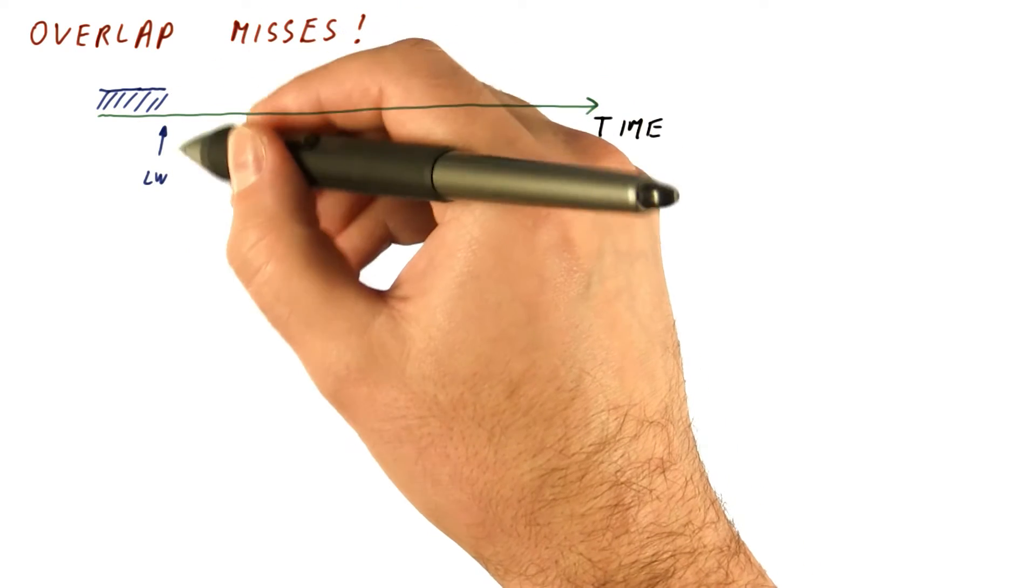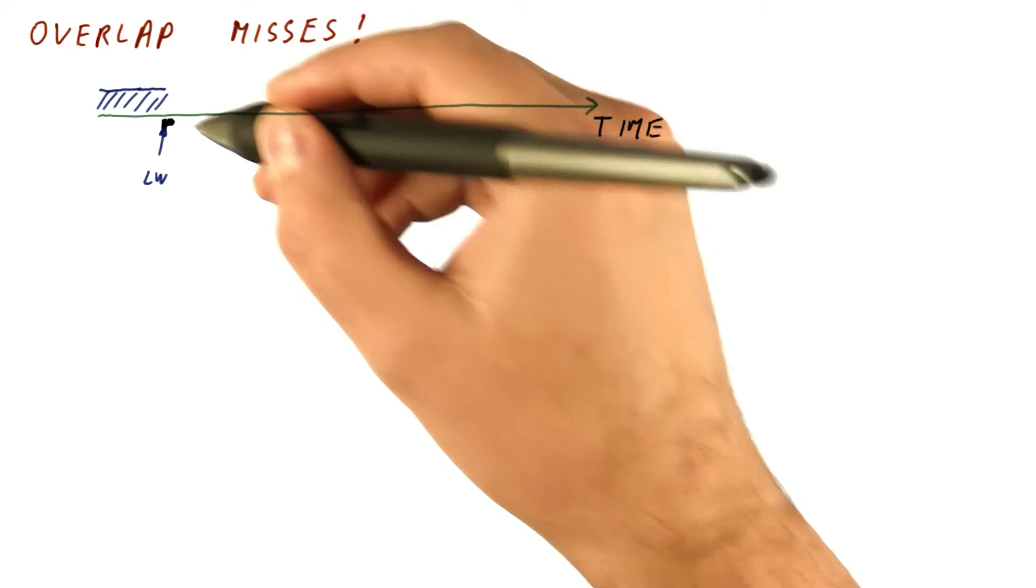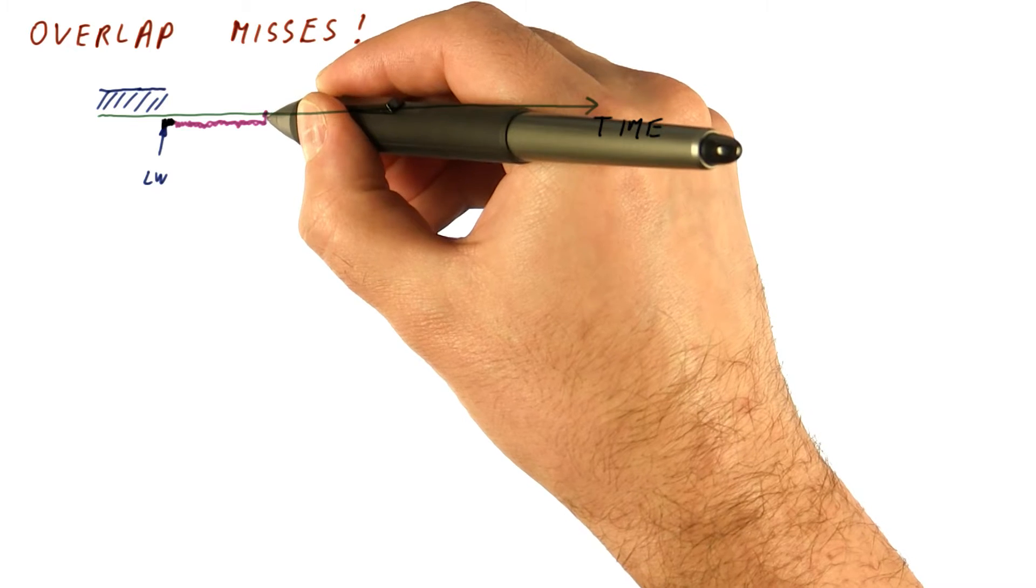And at some point, it does a load, for example. And now that load tries to be found in the cache. And if not, we're going to go to memory, and it eventually comes back.